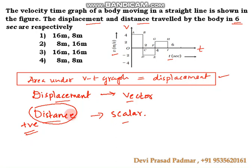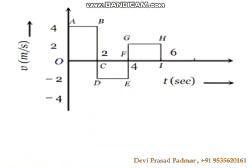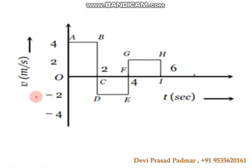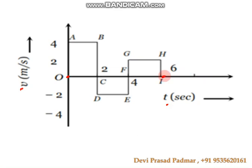So, the area under the velocity-time graph gives displacement. The difference is that distance is always positive. Now, considering the diagram, the area under the graph from 0 to 6 seconds gives the value of displacement.